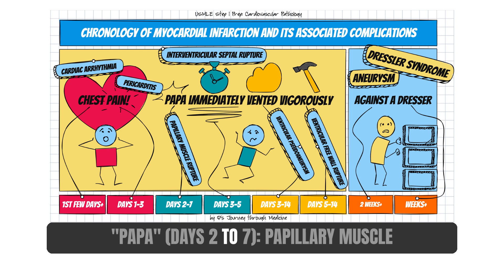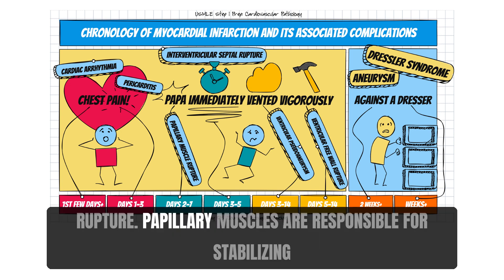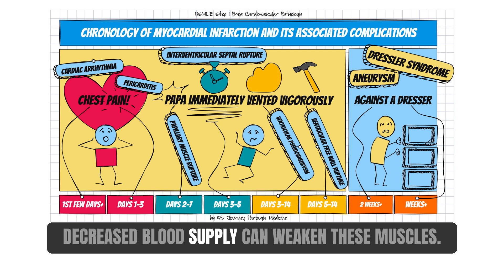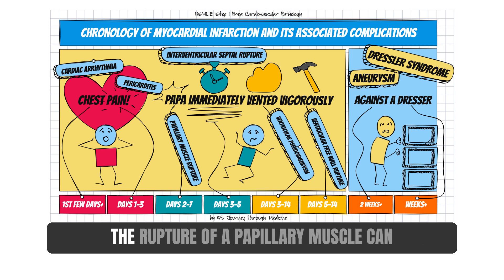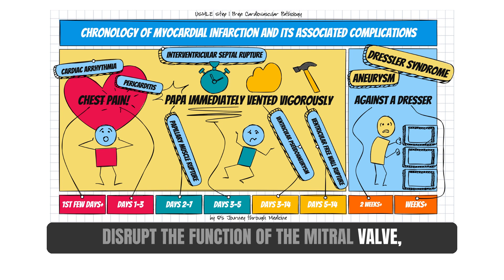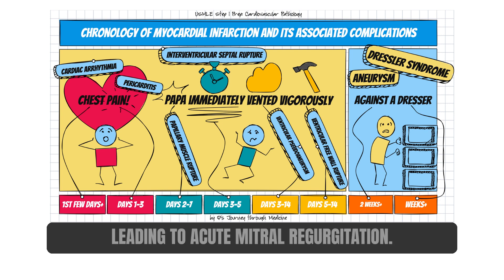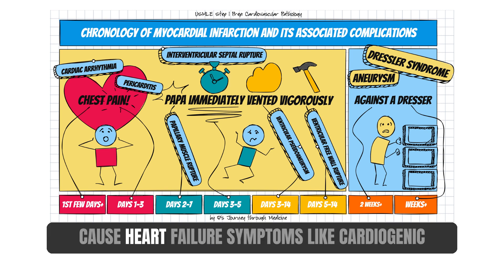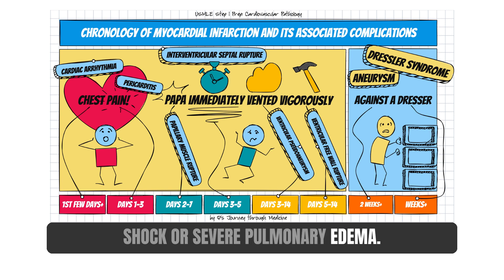Papa — days 2 to 7 — papillary muscle rupture. Papillary muscles are responsible for stabilizing the heart valves. Following a myocardial infarction, decreased blood supply can weaken these muscles. The rupture of a papillary muscle can disrupt the function of the mitral valve, leading to acute mitral regurgitation. This sudden backflow of blood can cause heart failure symptoms like cardiogenic shock or severe pulmonary edema.